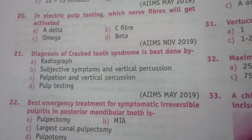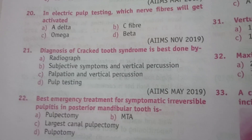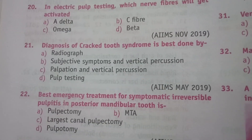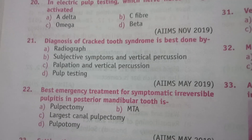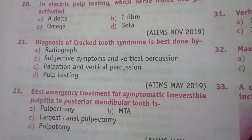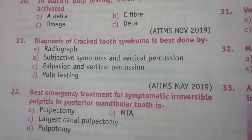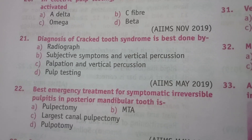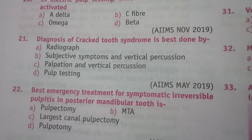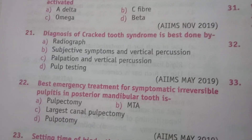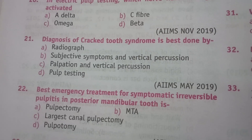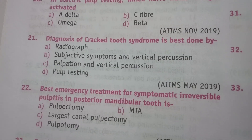Question 21: diagnosis of cracked tooth syndrome is best done by — radiograph; subjective symptoms and vertical percussion; palpation and vertical percussion; or pulp testing. Cracked tooth syndrome diagnosis is very difficult with many options, but the answer here is B, subjective symptoms and vertical percussion.